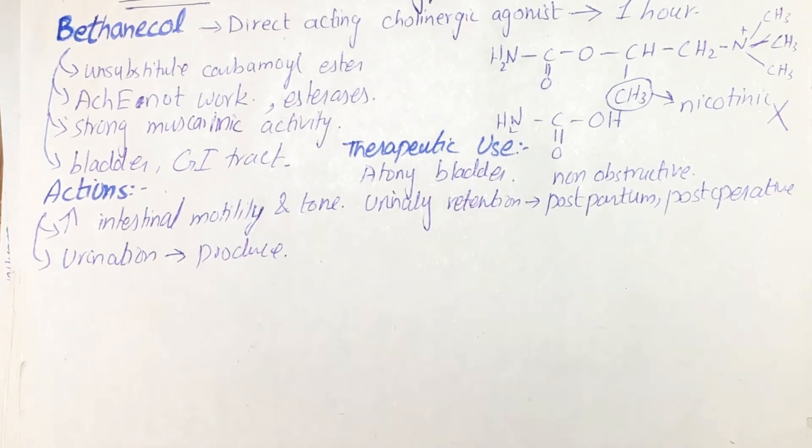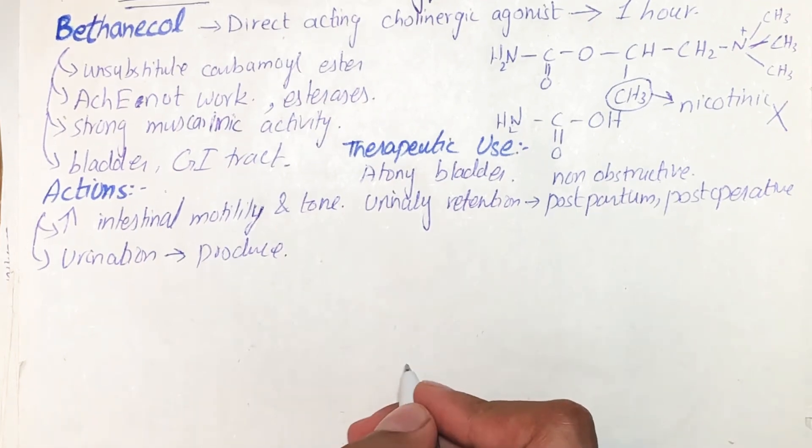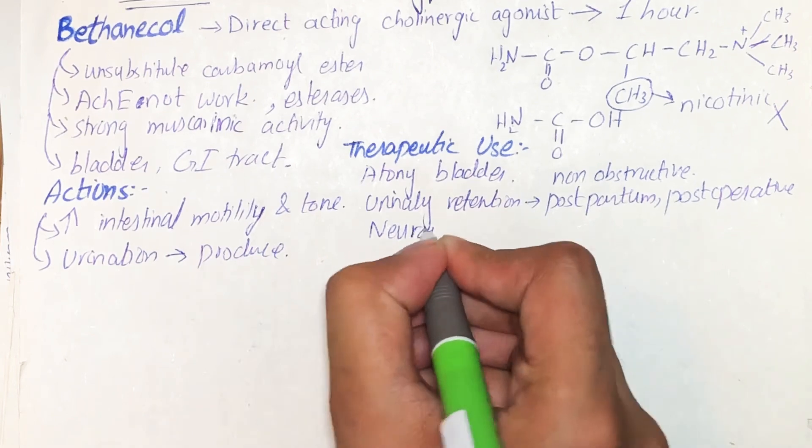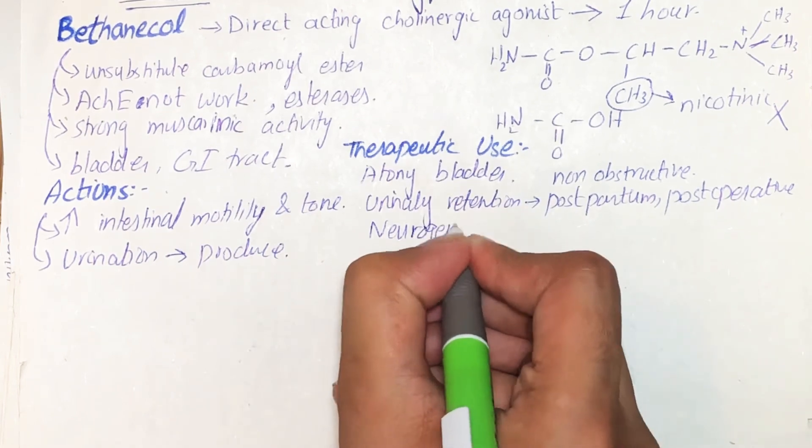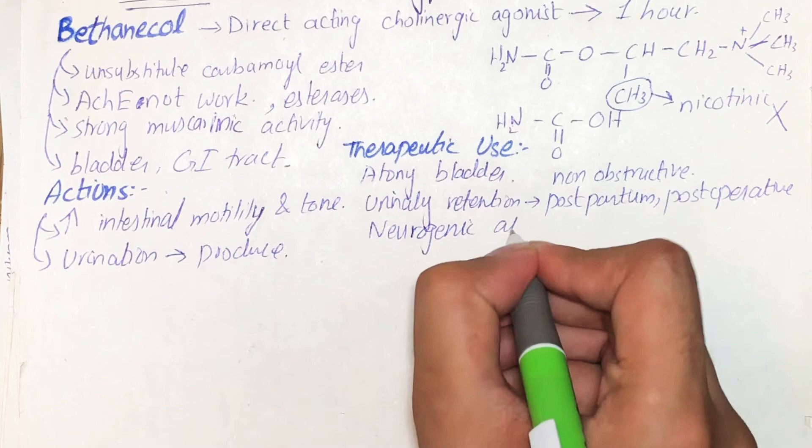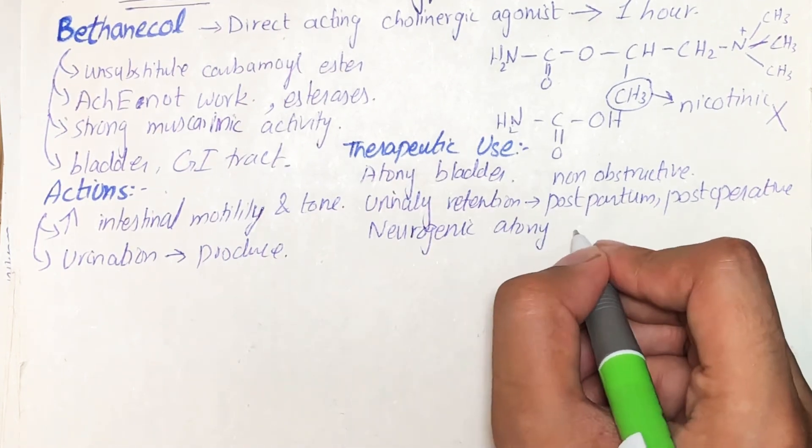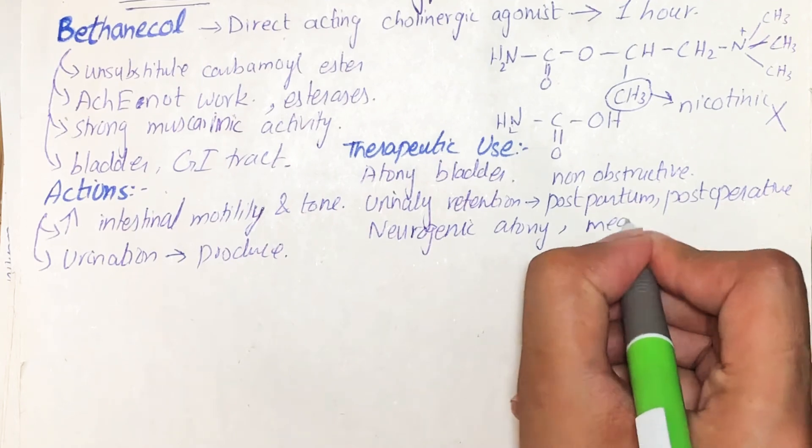But there is urinary retention going on in the patient's body. Other than that, bethanechol is also used to treat neurogenic atony as well as megacolon.